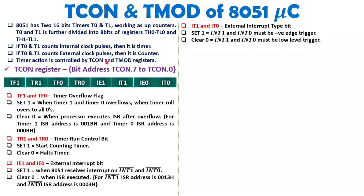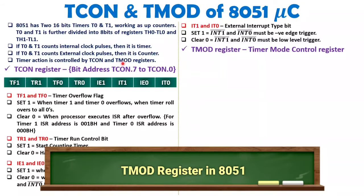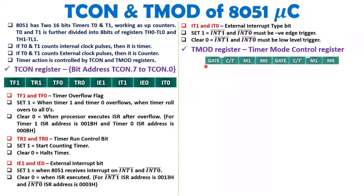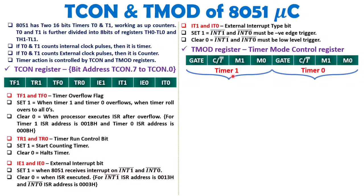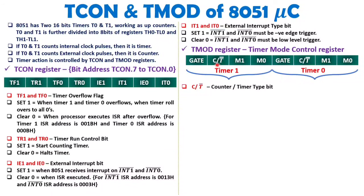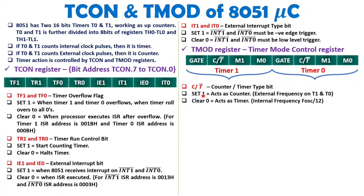Now I will explain the TMOD register. Note that TMOD register is not bit-addressable. The TMOD register explains how to configure timers or counters and in which mode the timer will function. Timer 1 uses the upper 4 bits and timer 0 uses the lower 4 bits. The C/T-bar bit determines whether the timer functions as a timer or a counter — when this bit is 1, it is counter mode; when 0, it is timer mode.